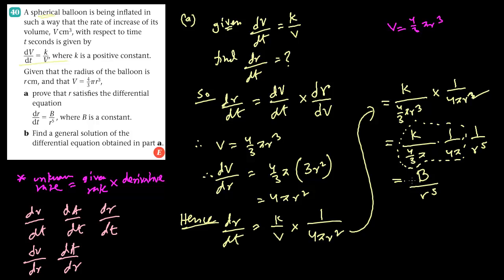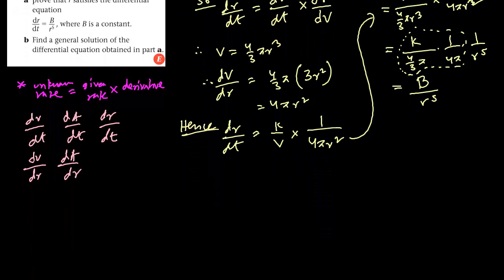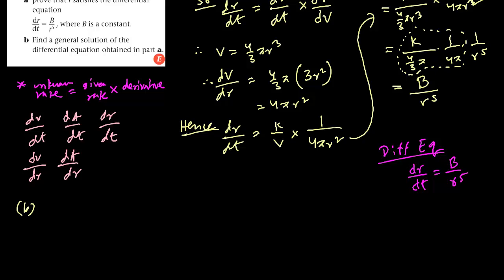So dr by dt equals constant divided by r to the power 5. For question part b, we have to find the general solution of this differential equation by integration using the separable method. A differential equation is any equation that has some sort of a derivative. The solution with the constant intact is known as the general solution. If you find the value of the constant, then it becomes a particular solution.